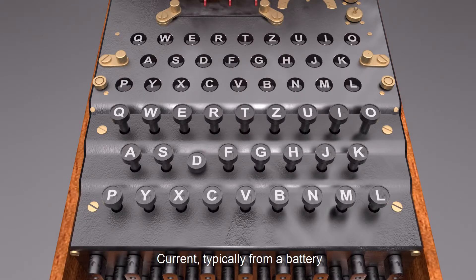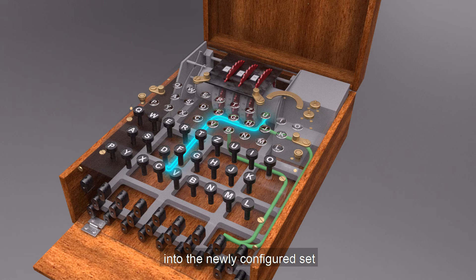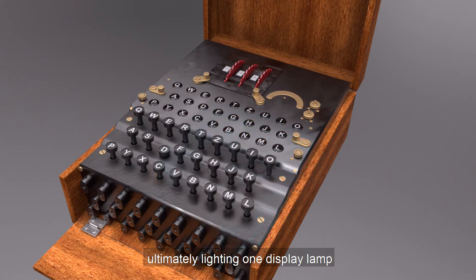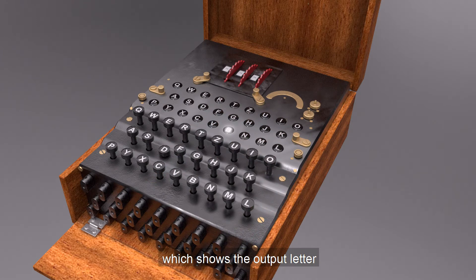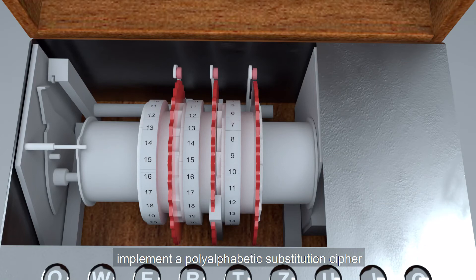Current, typically from a battery, flows through the pressed key, into the newly configured set of circuits and back out again, ultimately lighting one display lamp, which shows the output letter. The repeated changes of electrical path implement a polyalphabetic substitution cipher that provides Enigma's security.